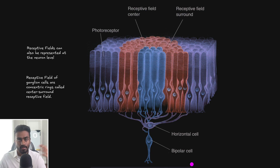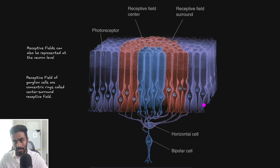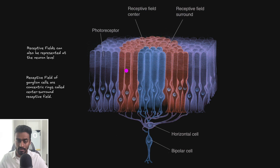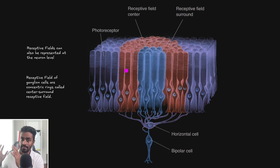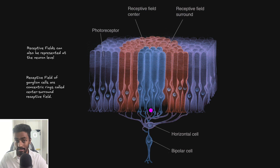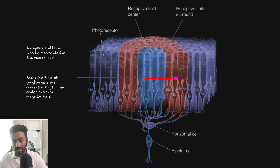The receptive field is going to be that region that affects the retinal ganglion cell in question. That's effectively going to be the bipolar cell, the horizontal cells, and the blue photoreceptors as well as the pink or red photoreceptors. All of this is constituted in the receptive field of the retinal ganglion cell. Interestingly in the retina, this is actually how the cells are organized — the receptive field is in two concentric circles, especially at the photoreceptor layer.